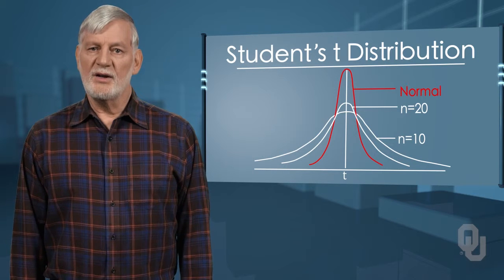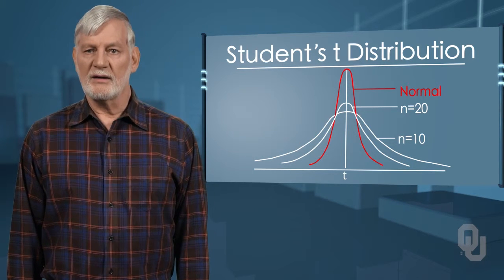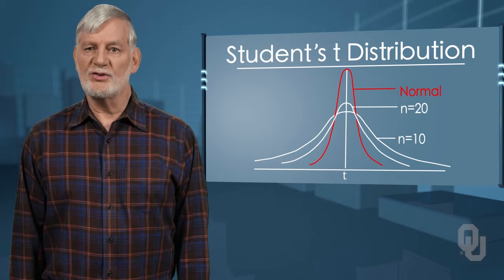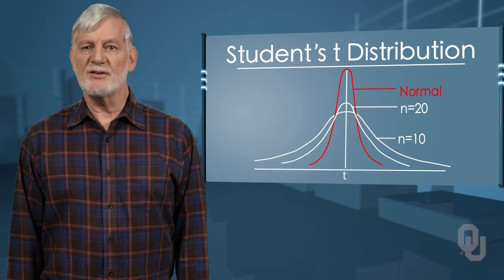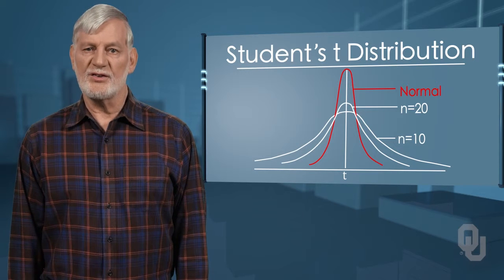This is another example of one distribution limiting another one. In this case, the normal distribution is the limiting distribution of the student's t when the degrees of freedom in the student's t reaches 30.